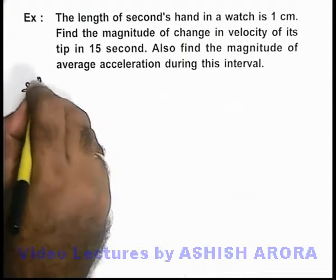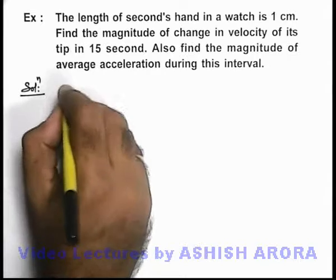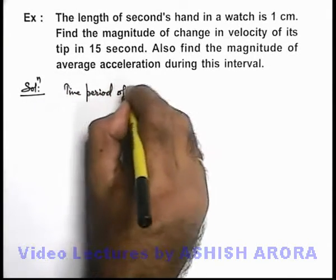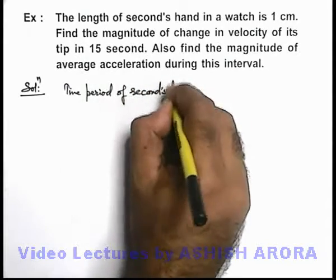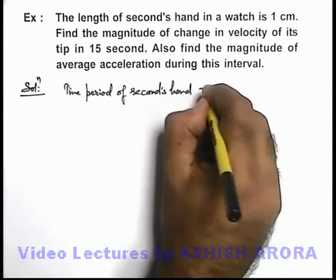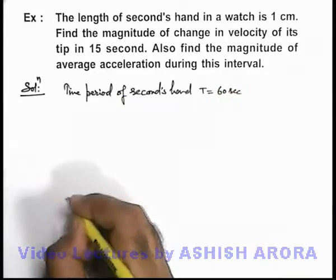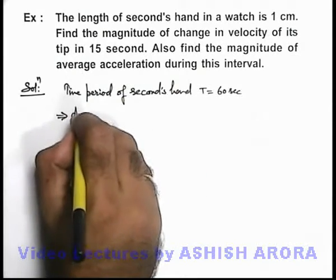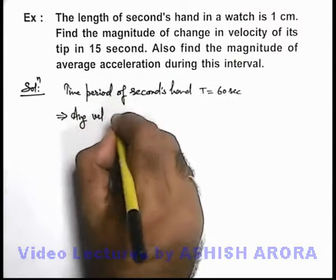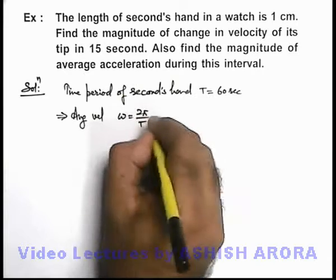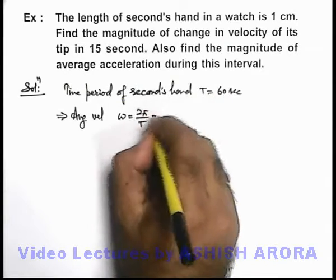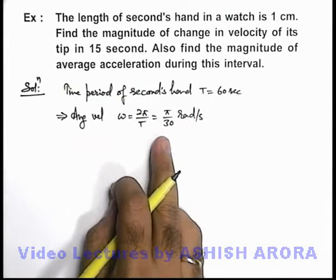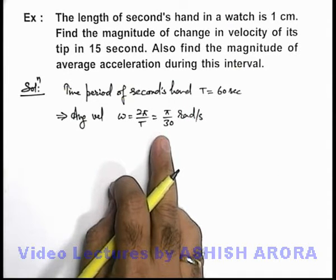Now in solution, step by step, we can proceed. If we talk about the time period of seconds hand in a watch, this time period we know is 60 seconds. If we know the time period, we can find out its angular velocity. This implies angular velocity is written as 2π by T. So if we put T equal to 60, this will become π by 30 radian per second. That is the angular speed at which the seconds hand in a watch rotates.